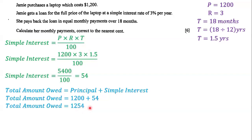Next, we determine her monthly payments. We take 1,254, the total amount owed, and divide it by 18 months. This gives us 69.666666 repeating, but we need to write our monthly payments correct to the nearest cent.